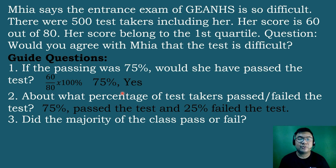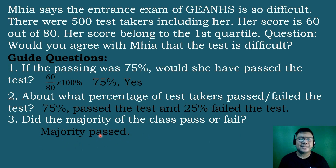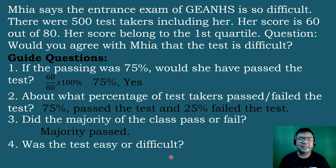Mia's score at the 1st quartile equals 75%, and there are students below the 1st quartile. So 25% of the students failed the exam while 75% passed. Question 3: did the majority of the class pass or fail? The majority passed, since 75% passed. So would you agree with Mia that the test is difficult? No — since 75% of the students passed and Mia scored 75%, we can conclude that the test is easy.